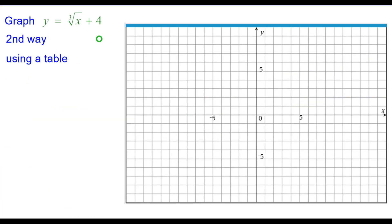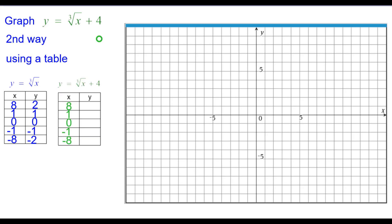The second way is we're going to use a table. So starting with the traditional cube root table, those 5 points, we're going to add 4 to each of the y coordinates. Again, because that's what it says to do in the equation. So 2 plus 4 is going to be 6.